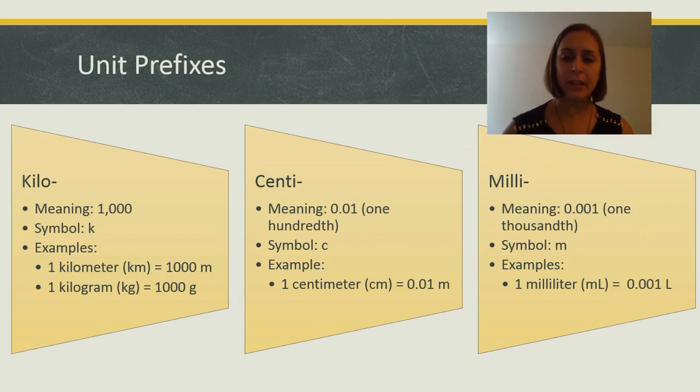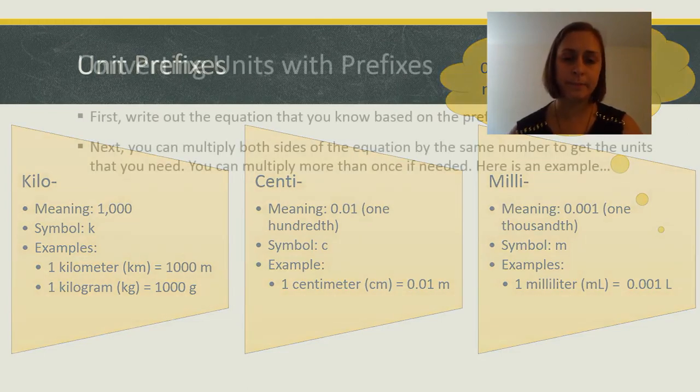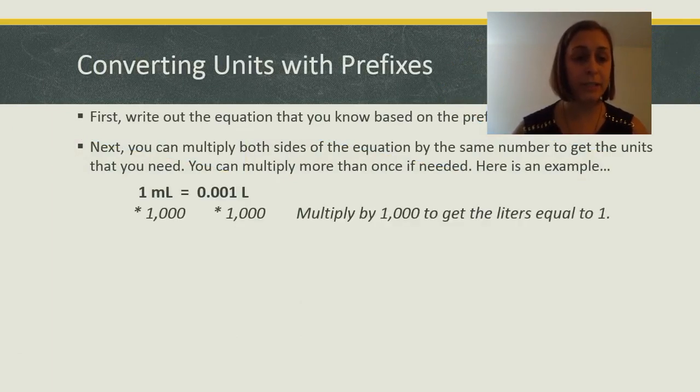So, I'm going to ask you to think about this. If one milliliter equals one thousandth of a liter, then how many milliliters are in a liter? First, you're going to write out the equation that you know based on the prefix. One milliliter equals one thousandth of a liter. Next, you multiply both sides by the same number to get the units you need. You can multiply more than once if needed, depending on what answer you're trying to get.